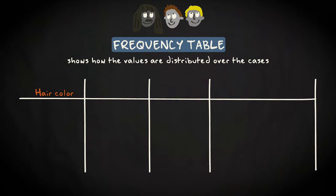A frequency table is nothing more than a list of all possible values of a variable, together with the number of observations for each value. Here's an example, based on the variable hair color.